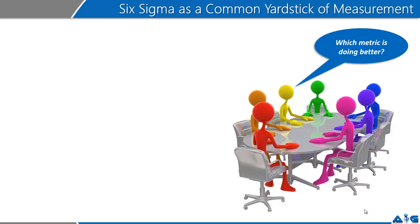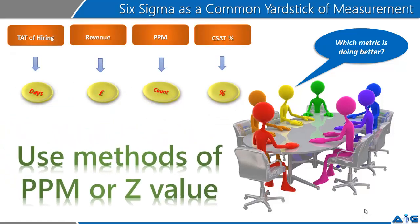Oftentimes in organizations, when we seek to measure the performance of business processes, we have several metrics that come to our notice. We may be looking at revenue numbers, which are in pounds or dollars. We may be looking at hiring TAT, which could be in days. We could be looking at parts per million, which would be in count. CSAT, which is in percentage. And when you seek to compare which business process is doing better, we are pretty much helpless. You cannot end up comparing days to dollars to count to percentage, etc.